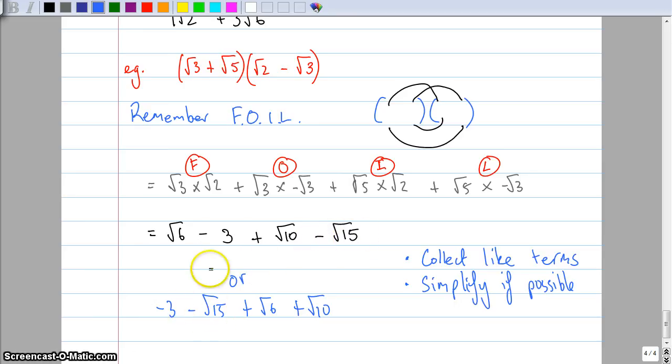So negative root fifteen, negative root fifteen, negative three, negative three, positive root six and positive root ten. So it doesn't matter which order you put them in as long as it all works like that. Hopefully that has made a little bit of sense today. Now you can attempt exercise 12.4.